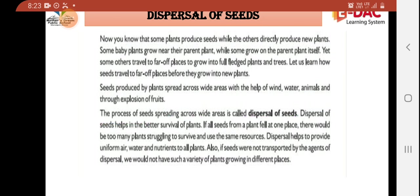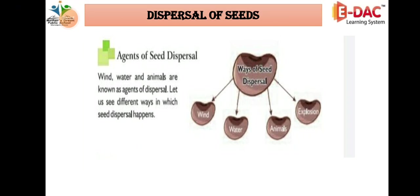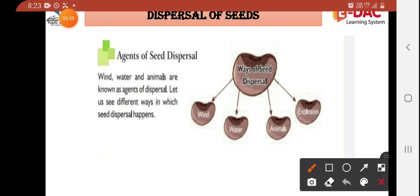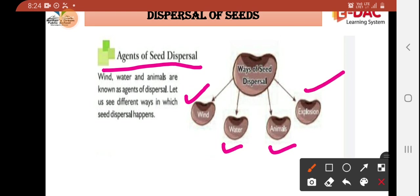Today we will study the agents of seed dispersal. An agent is the one that carries seeds to another place — we call it the agent of seed dispersal. Wind, water, and animals are known as agents of dispersal. Let us see the different ways in which seed dispersal occurs: wind, water, animal, and explosion — these are the four ways through which seeds can disperse from one place to another.